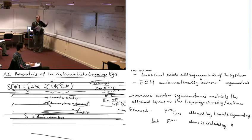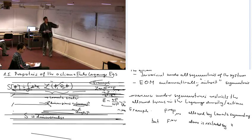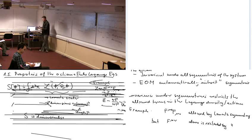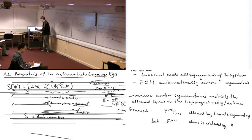The strategy is to find the physical symmetries of a system and then exclude many, many terms from appearing in the Lagrangian. Moreover, there is a very deep connection between symmetries and conserved quantities — something we'll see pretty soon.